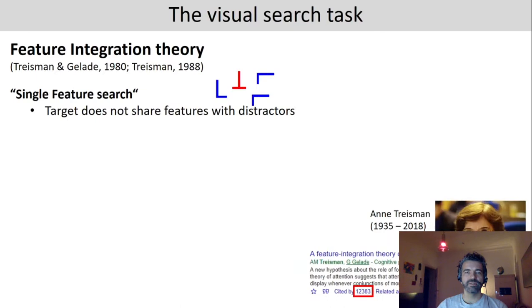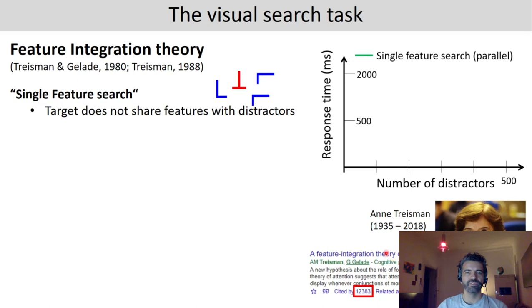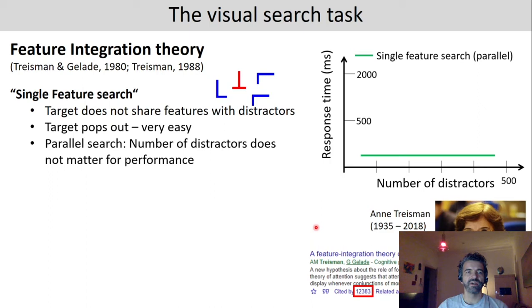Now based on these findings the Feature Integration Theory was conceived by Anne Treisman and colleagues. She distinguished between different kinds of search types. The single feature search would be possible when the target does not share any features with the distractor. So this is a parallel search. You can basically process all the items in the visual field in parallel which is relatively fast. So if you increase the number of distractors there is no increase in the response time because you can still process them in parallel. The reason is that the target pops out and the parallel search is thus very efficient regardless of how many distractors you have.